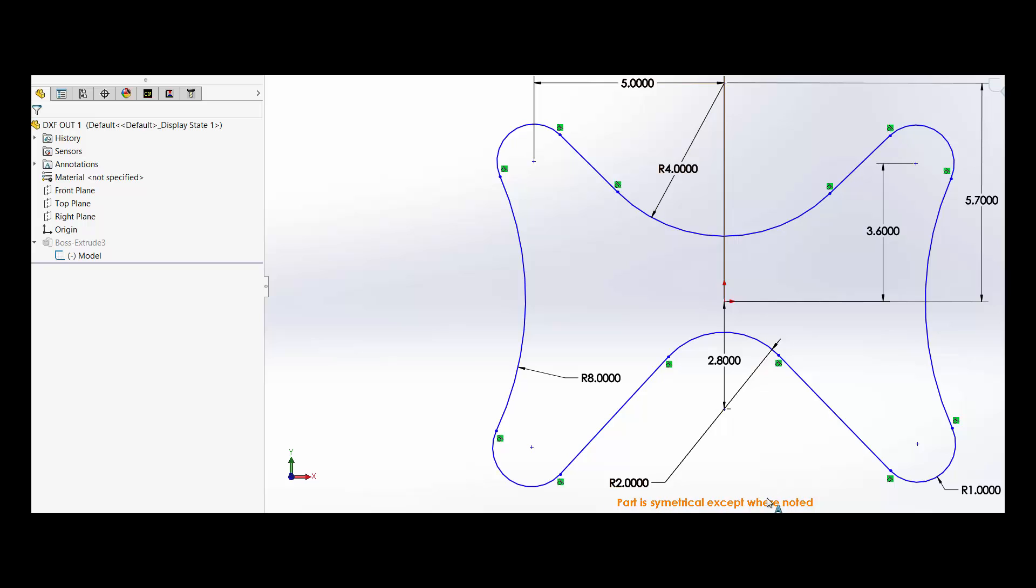So we can see here the part is symmetrical except where noted. All of these outside radii here are one inch, and the inside radius is a two inch radius. There's your center height of this four inch radius. So the two inside radii are what's different, everything else on the part is symmetrical. This would be an eight inch radius.